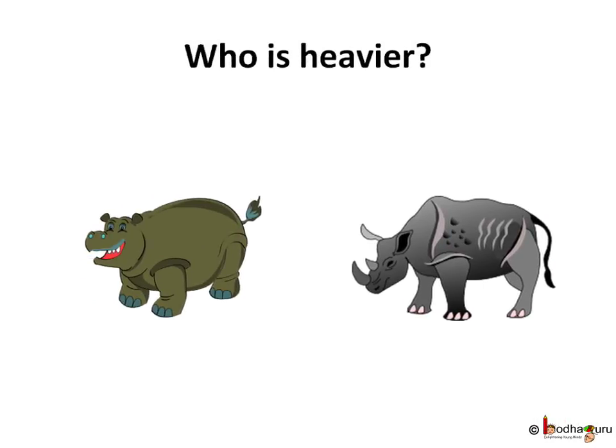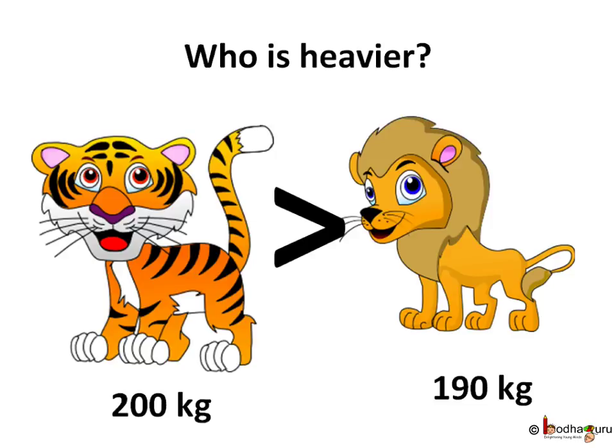Rhino and hippo both look very heavy. We can tell who is heavier after measuring their weight in kilograms — rhino is heavier than hippo. Lion and tiger both look big and ferocious, but tiger is heavier than lion. Most tigers weigh more than 200 kg, but a lion's weight can be up to 190 kg, so tiger is heavier.